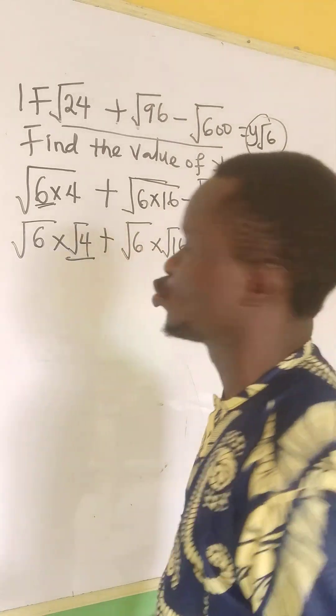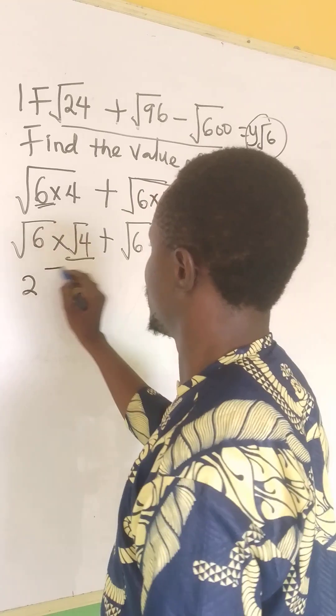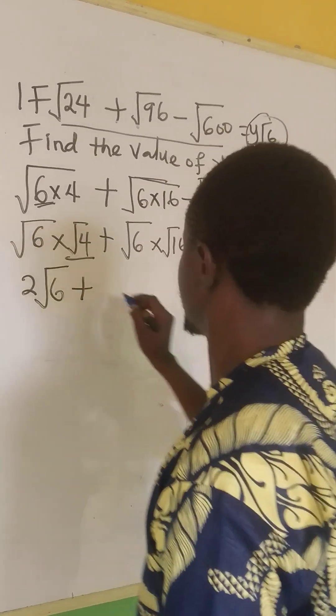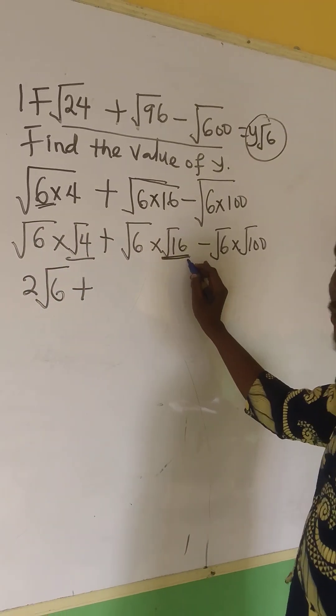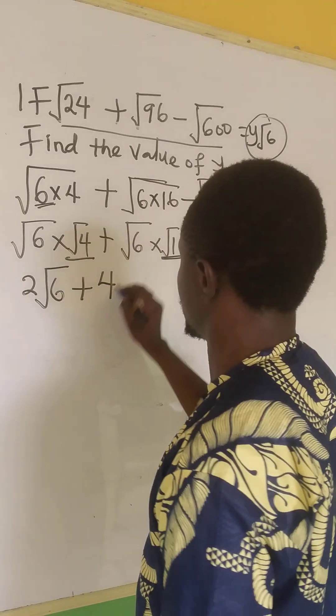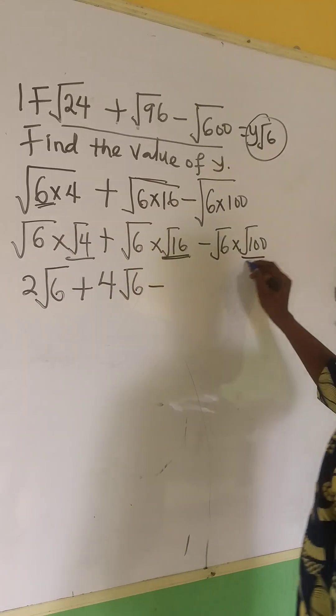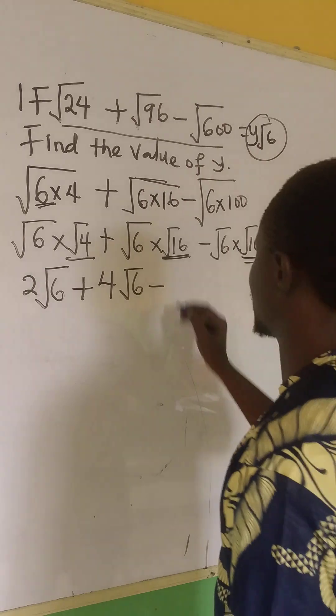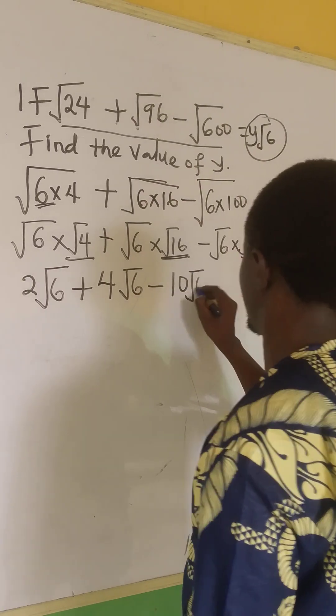Now, the square root of 4 is 2. That's 2 times √6, beginning √6. Plus the root of 16 is 4, 4 times √6 is 4√6. Minus the root of 100 is 10, 10 times √6 is 10√6.